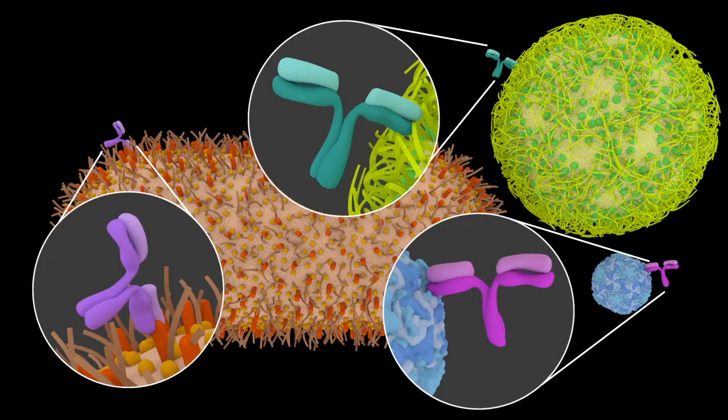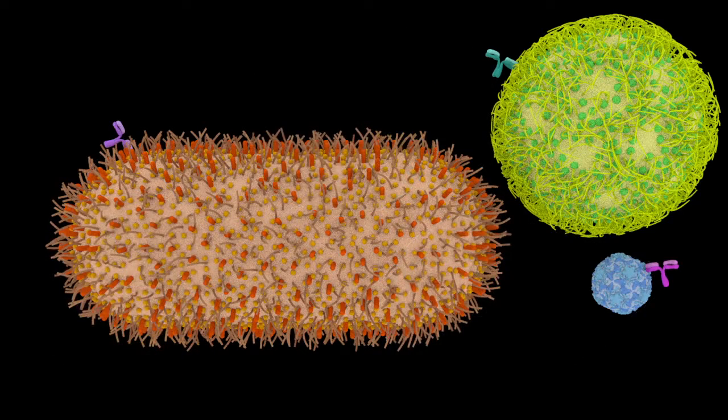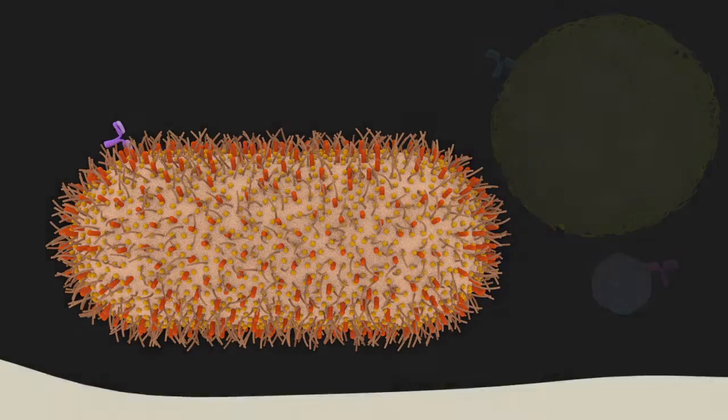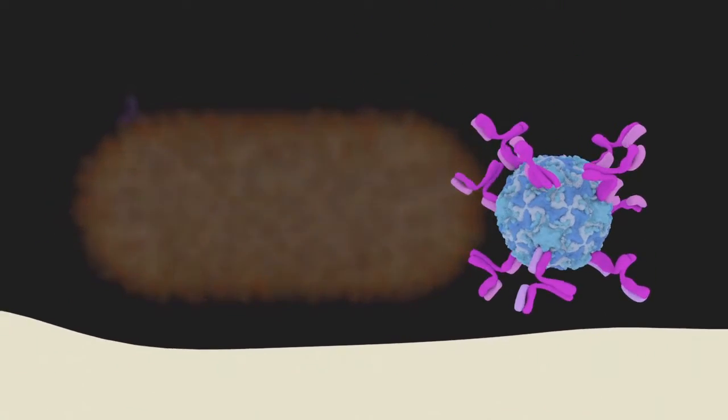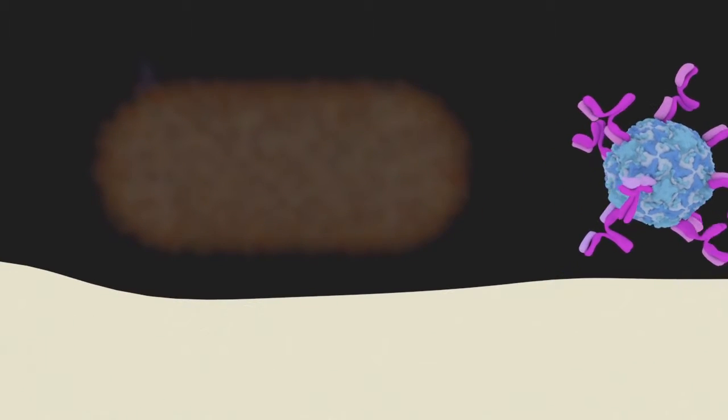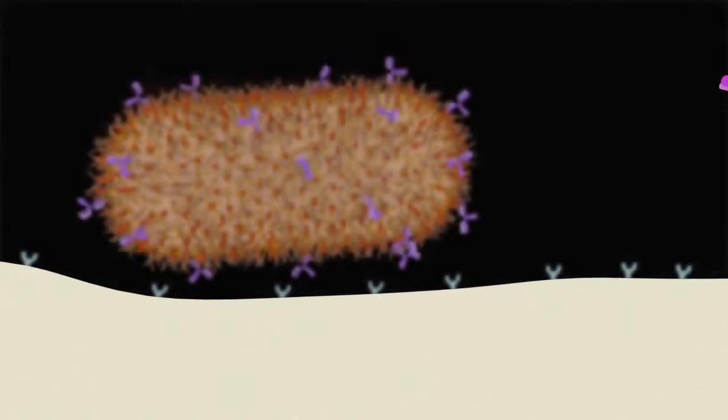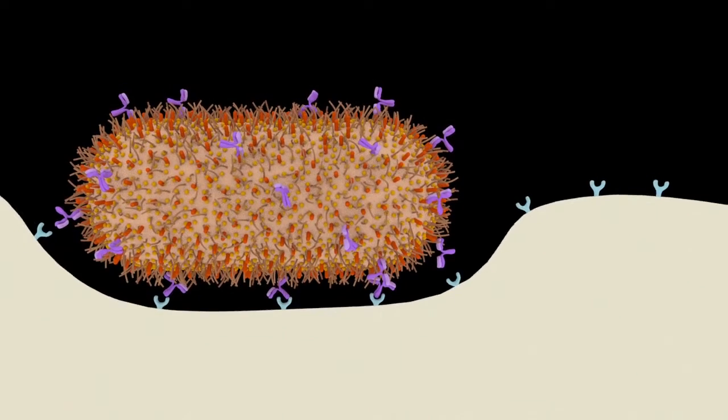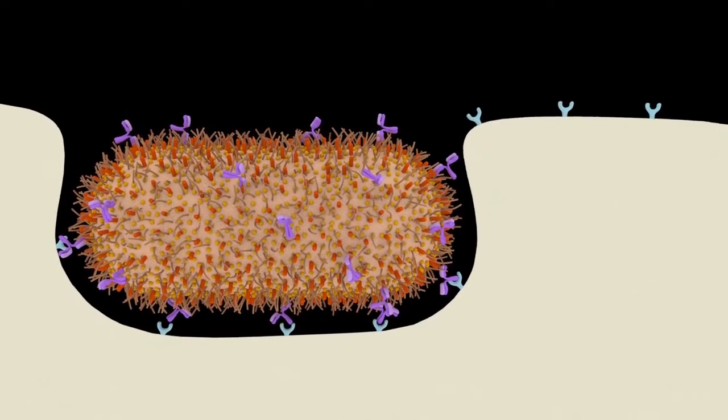Antibodies can serve two functions. Antibodies can neutralize pathogens by binding to their antigens and blocking their action, such as preventing a virus from entering a cell or blocking a bacterial toxin. Antibodies also mediate the destruction of pathogens by acting as markers that other cells in the immune system recognize.